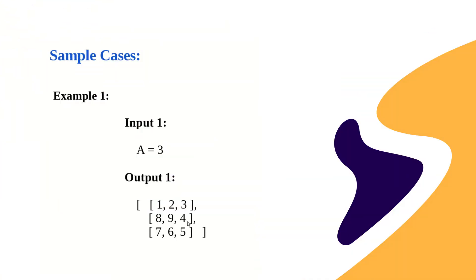Let's have a look at the sample case. Suppose the given input integer is 3. We need to output a square matrix in spiral order. The elements are filled in sequence: 1, 2, 3, 4, 5, 6, 7, 8, 9 — as you can see the elements are filled in a spiral order: right, then down, then left, and then up, and so on.